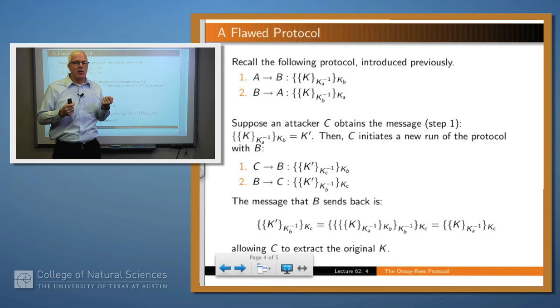one as its value K. If you plug that value K into the result that B sends back in step two of the second run of the protocol, you'll see the algebra at the bottom.